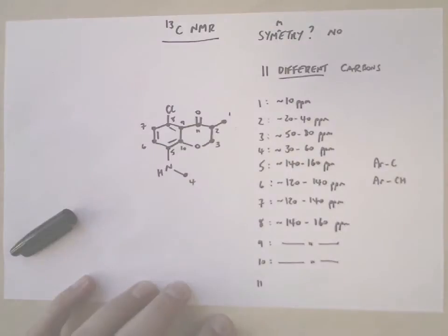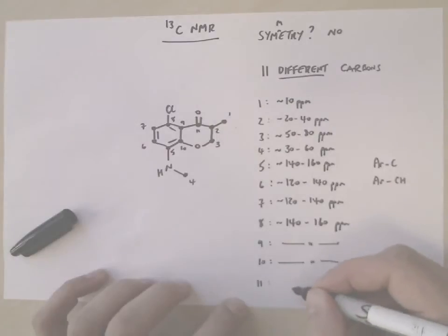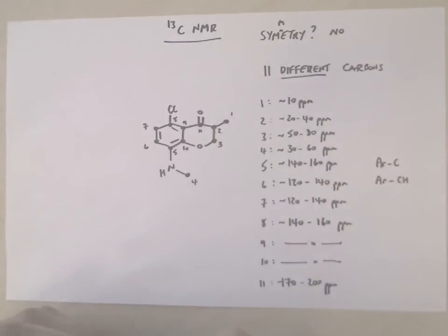And finally, we have the ketone at 11. And ketones are very electron deficient at the carbon, and they come around 170 to 200 ppm. And that is the carbon NMR of that compound.